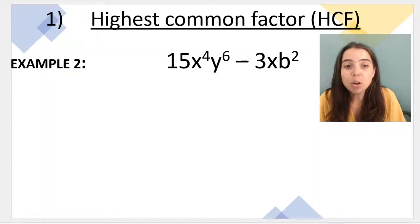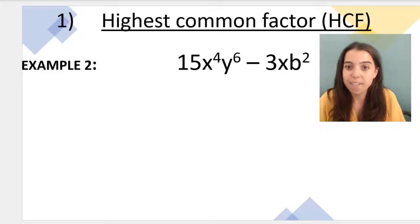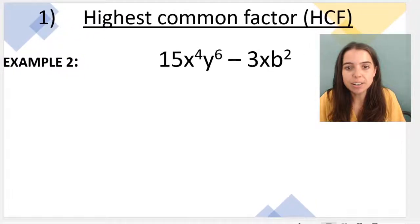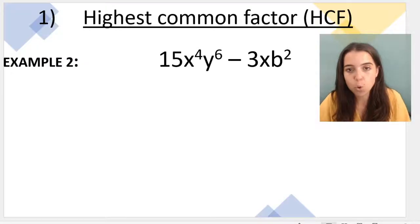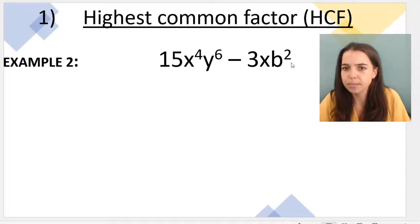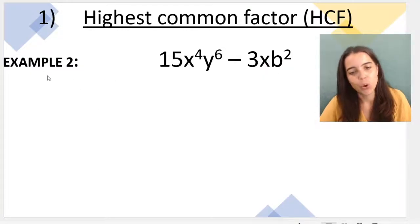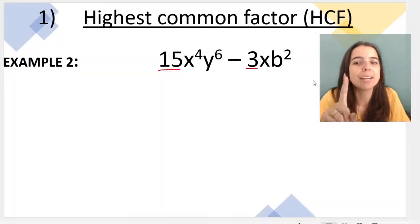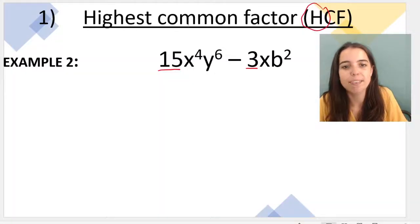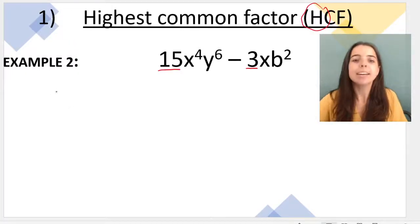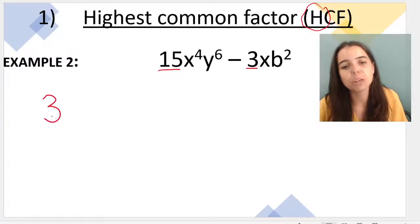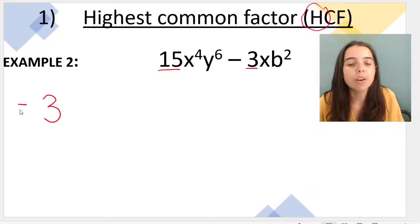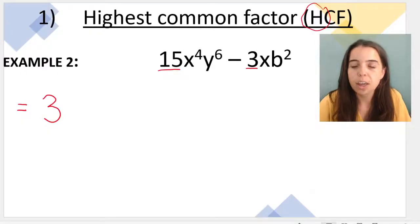In the next example we have 15x⁴y⁶ minus 3xb². Can I find a number that divides into both 15 and 3 without a remainder — and the biggest one? Yes: 3 goes into both 15 and 3 without a remainder. So 3 is part of our highest common factor. We've handled the numbers; now we look for common variables.